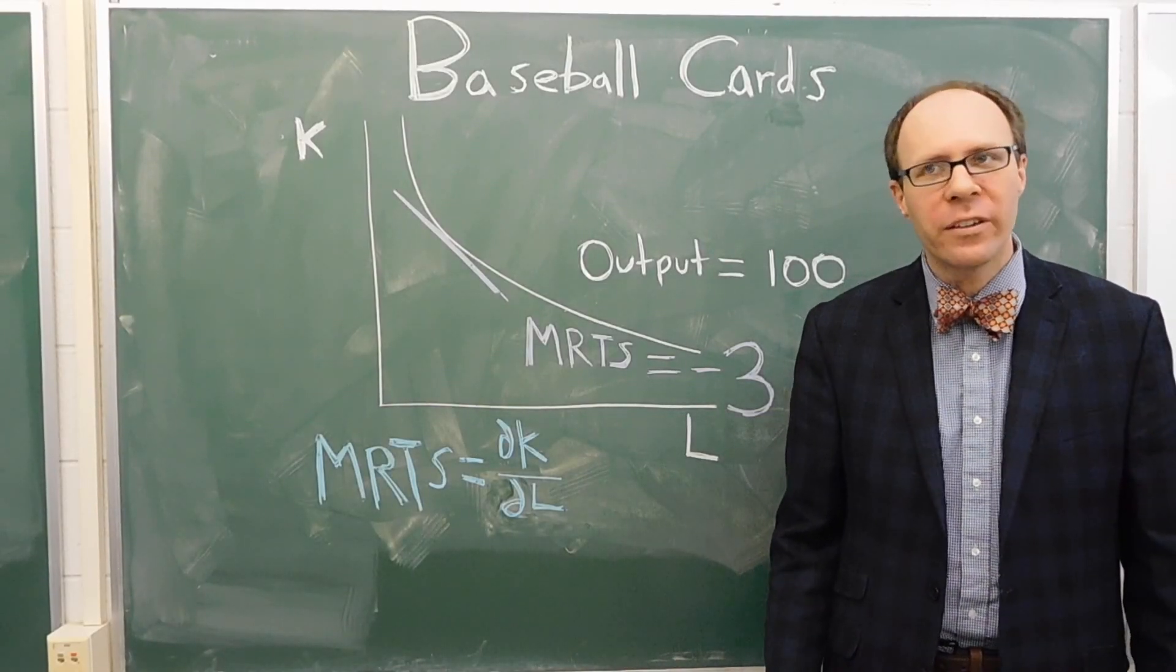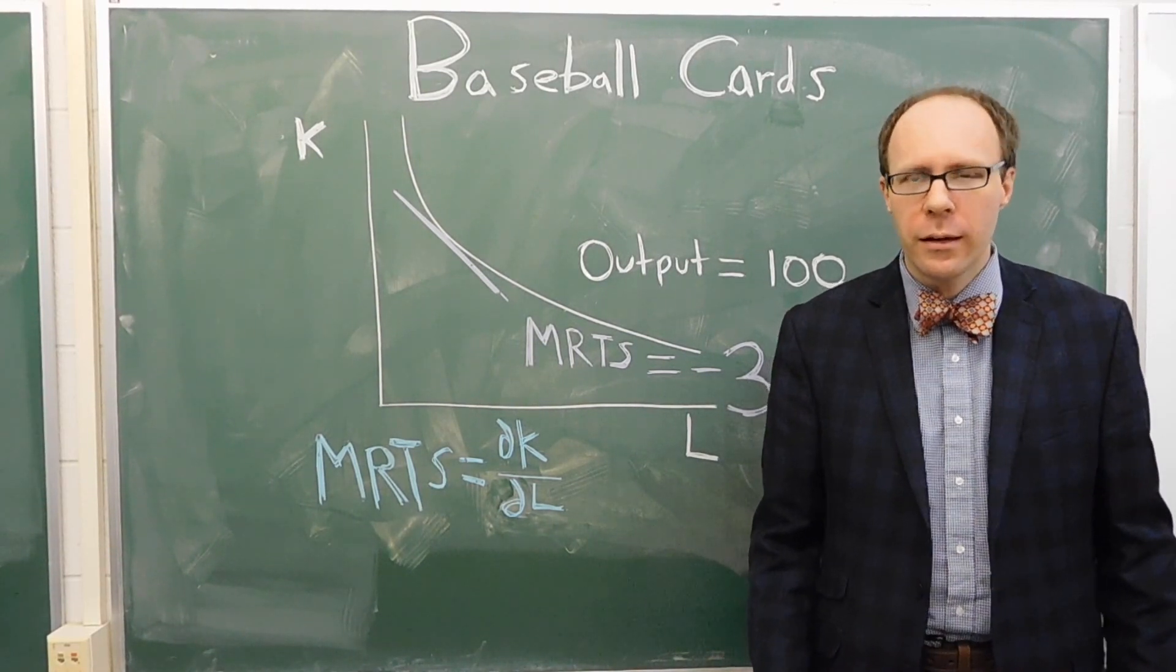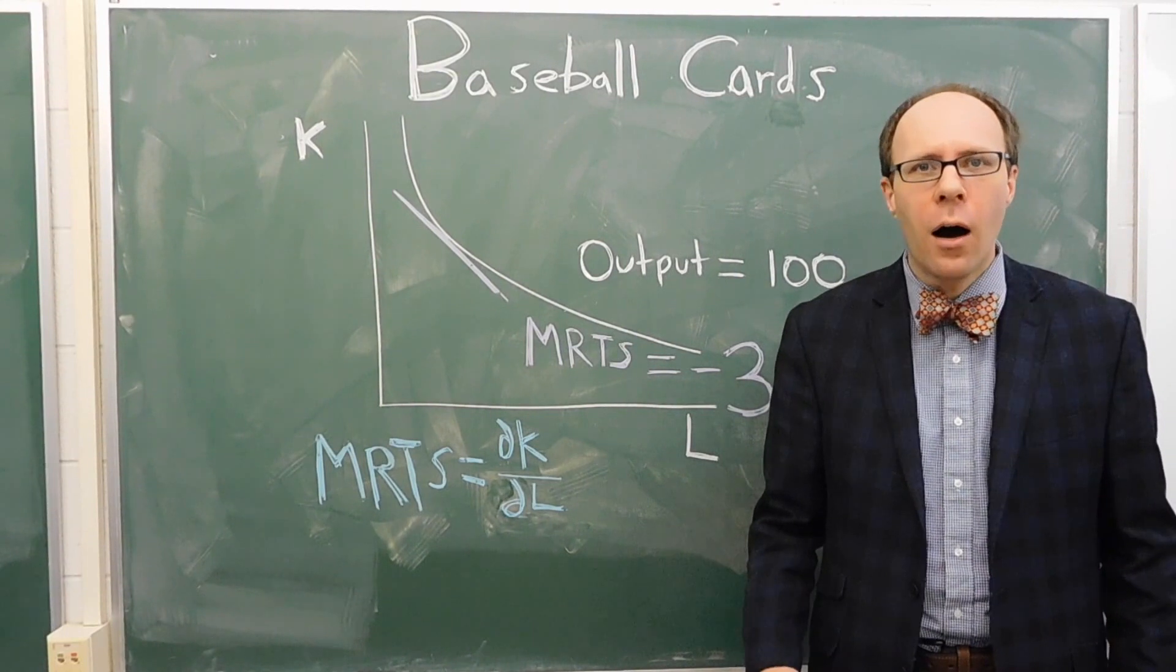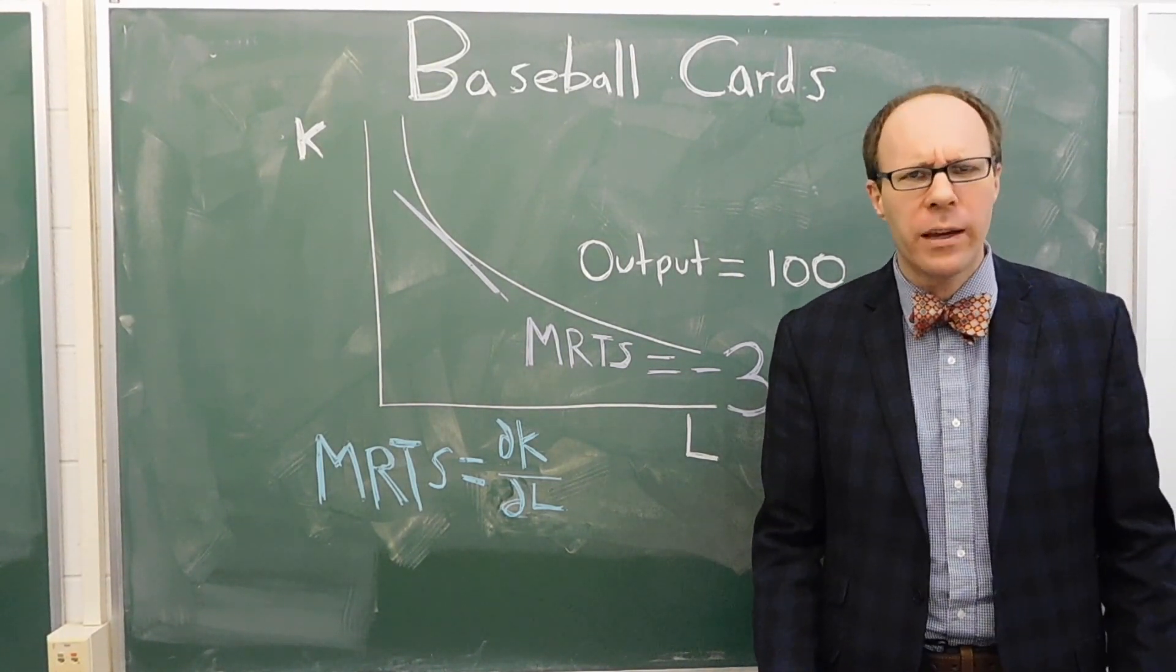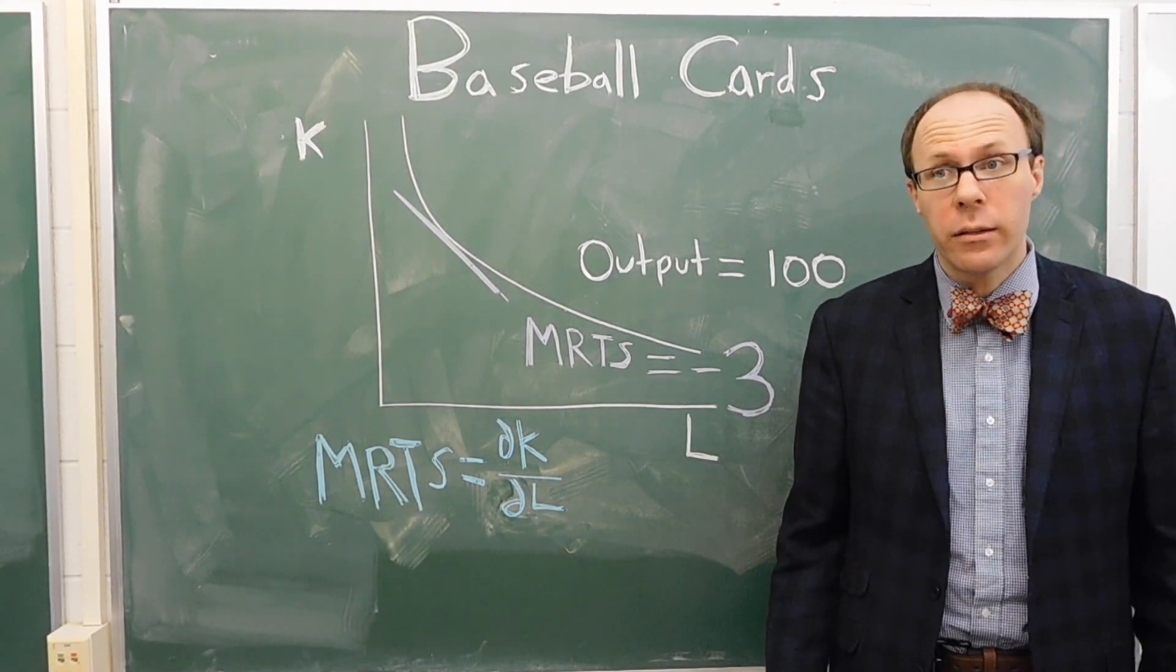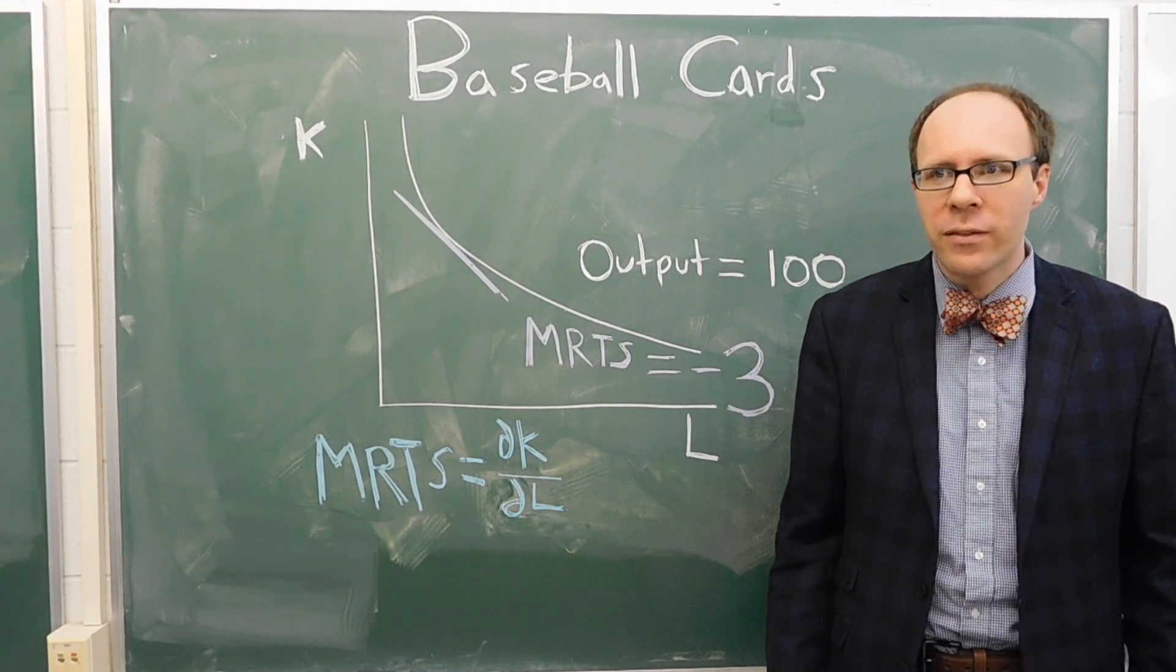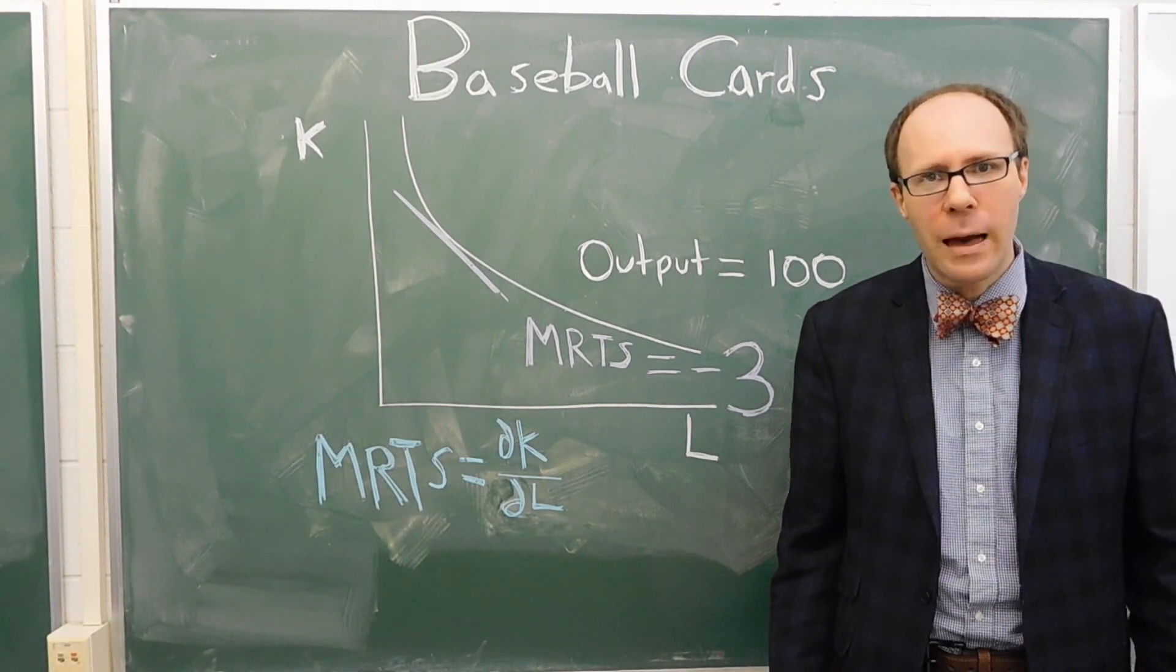All right, quick version on the marginal rate of technical substitution. So you're going to see on the board a white fly - that's an isoquant. It's going to tell us all the different combinations of labor and capital that can make 100 baseball cards. Now notice there's different combinations - maybe it's 10 units of labor and 4 units of capital, maybe it's 6 units of labor and 12 units of capital.